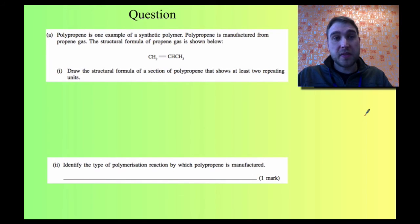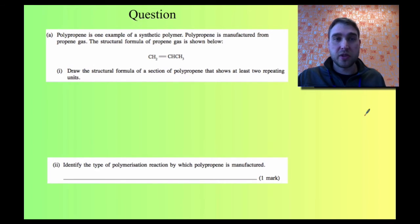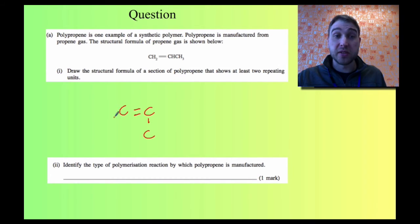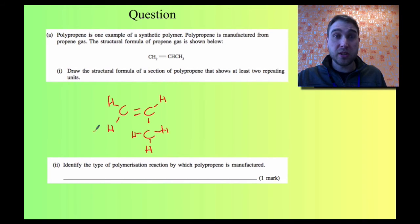Here are some example questions. The first one says polypropene is an example of a synthetic polymer produced from propene gas. Draw the structural formula of a section of polypropene that shows at least two repeating units. First, I'm going to draw propene in a slightly different way: C double bond C to C, and now I put my H's on — one H here, one H here, one H up here, and three H's down here. Drawing it like that, I can see more easily where it will join on.